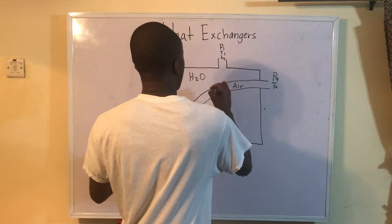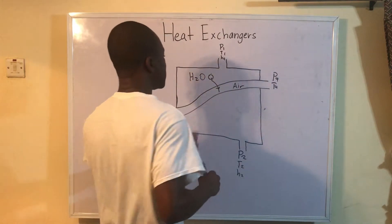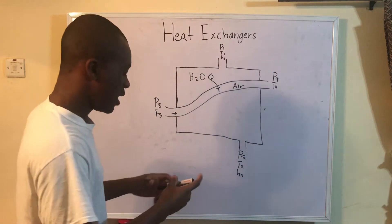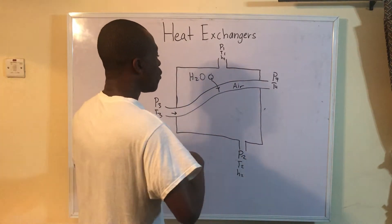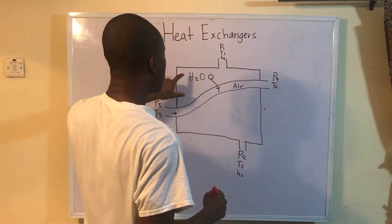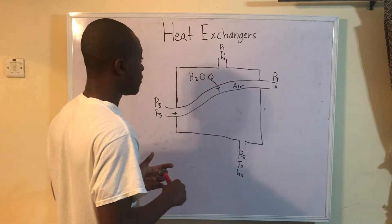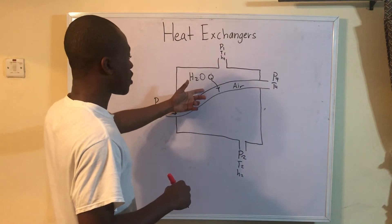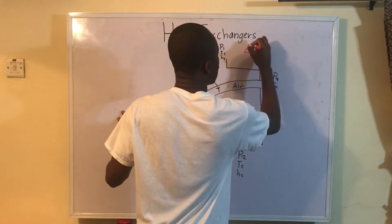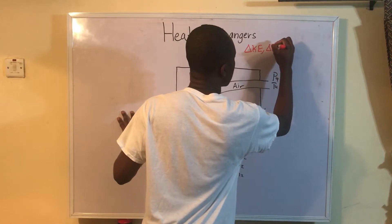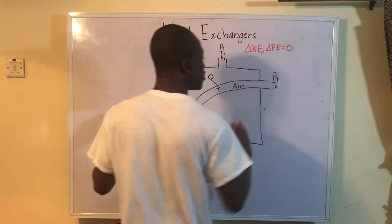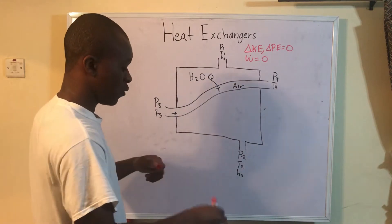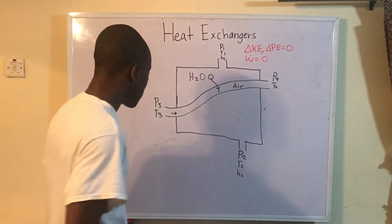What we know is that Q dot is leaving this water and coming into the air. We have a flow of heat from the water to the air because we're trying to heat that air up. It's important to note a few things with heat exchangers: we're going to look at the whole thing as adiabatic, so there's no heat coming in or out of the system as a whole. But looking at water and air separately, there's Q dot leaving water and coming into air. Also, KE and PE have no change because we're dealing with a stationary system, and there's also no work done with the heat exchanger.